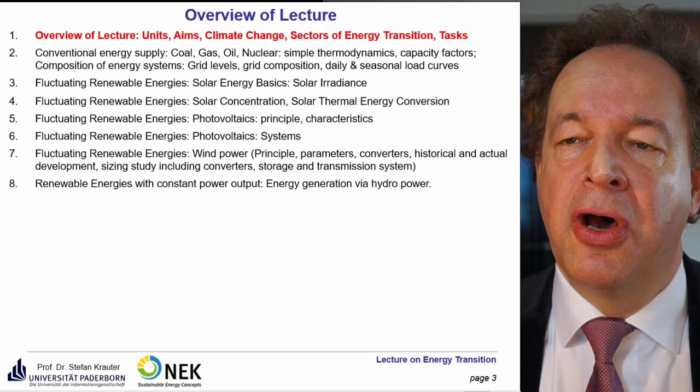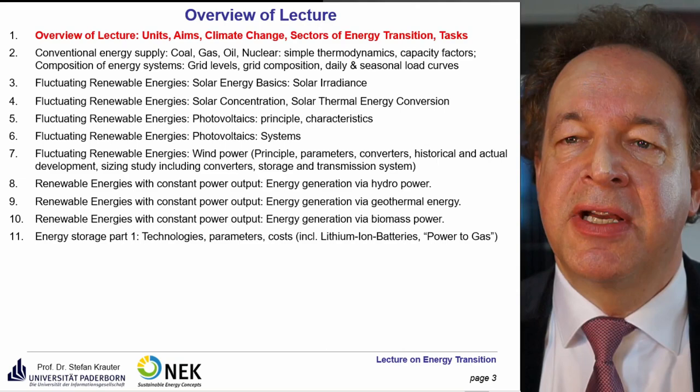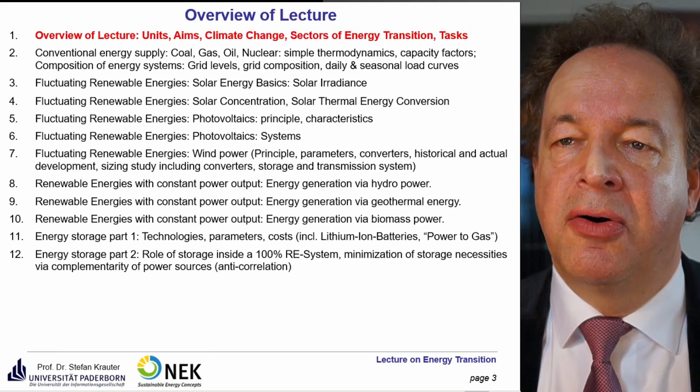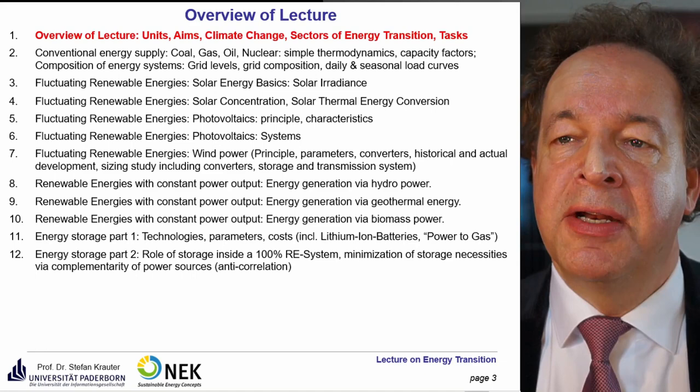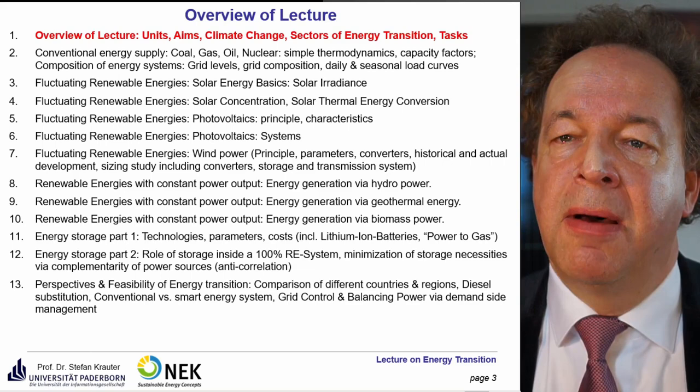Then we come to renewable energies with constant power output, such as stored hydropower, geothermal energy, and biomass power. Then energy storage: Part 1 covers technologies, parameters, costs, lithium-ion batteries, and the power-to-gas principle. Part 2 discusses the role of storage inside a 100% renewable energy system and how to minimize storage needs via complementarity of power sources, also called anti-correlation.